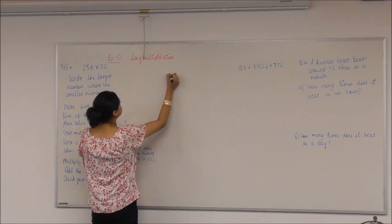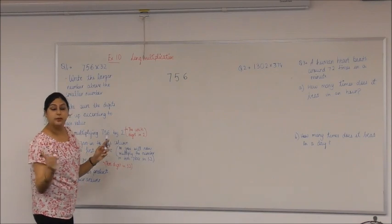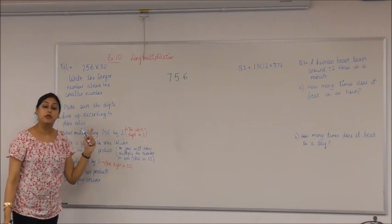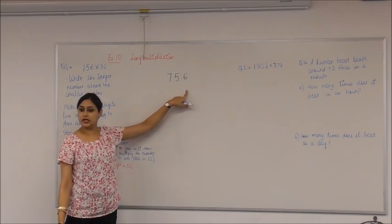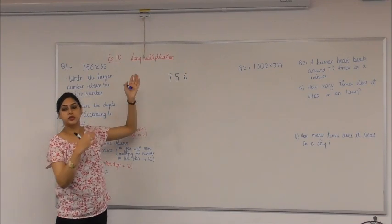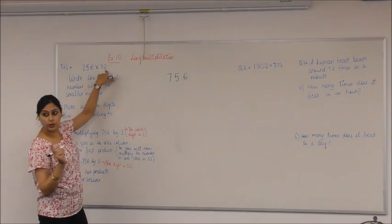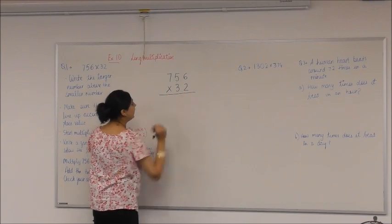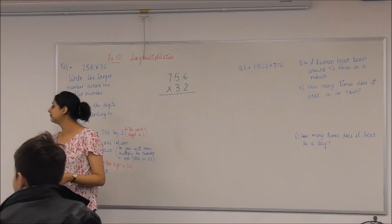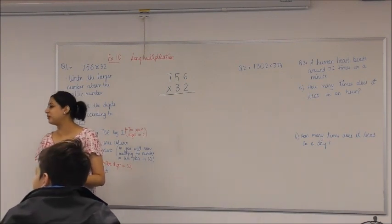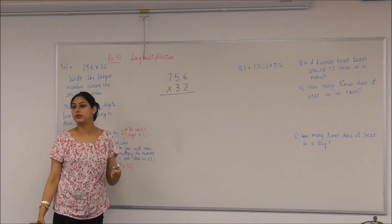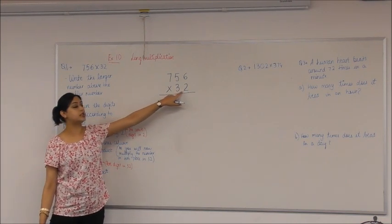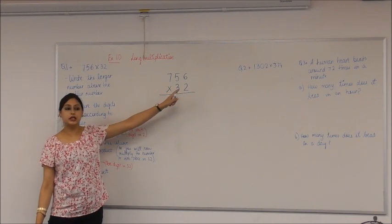Okay, so I'm going to write that. So the larger number is 756 and the smaller number is 32. Before I write the smaller number, I need to read the second step. Make sure the digits line up according to place value. Remember we did this for addition and subtraction as well? So that means the ones digit will go underneath the ones digit, the tens digit will go underneath the tens and hundreds and so on. So we've got 32. Three is in tens place and two is in ones place. So three will go here and two will go here. It is really important. So I'm going to put a multiplication sign. Now, next step.